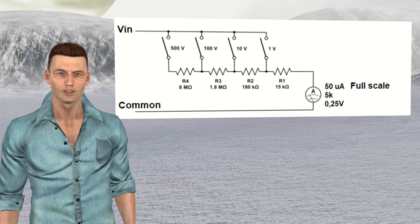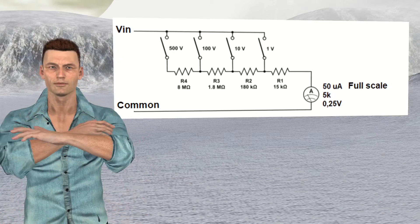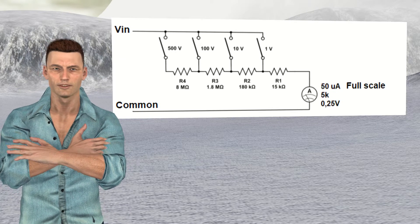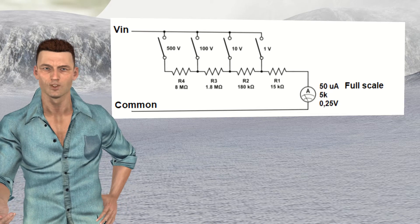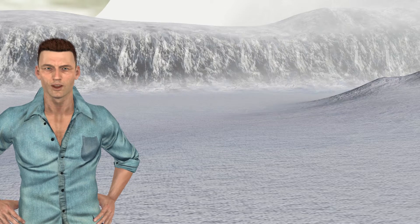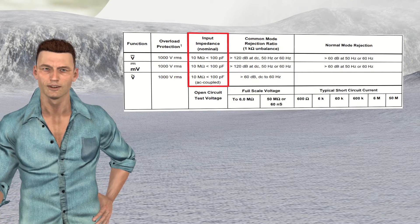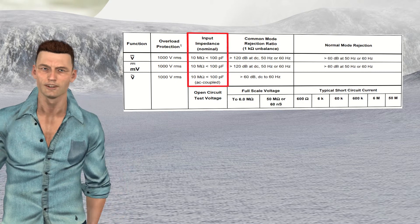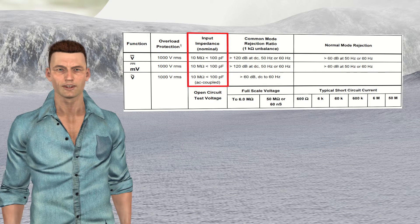Here we can see a typical circuit of an analog voltmeter with four different voltage ranges. In this case the input impedance can vary from 10 mega ohms — that is, 10 million ohms — when the voltmeter is in the 500 volt range, to only 20,000 ohms in the 1 volt range. On the other hand, the Fluke 87V digital multimeter in its specifications indicates an input impedance of 10 mega ohms, that is 10 million ohms, for normal functions of measurement of direct and alternating voltages.